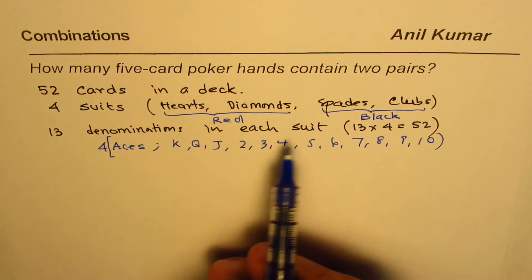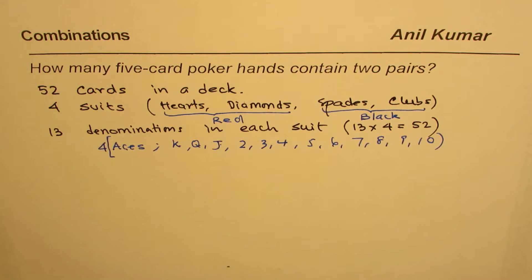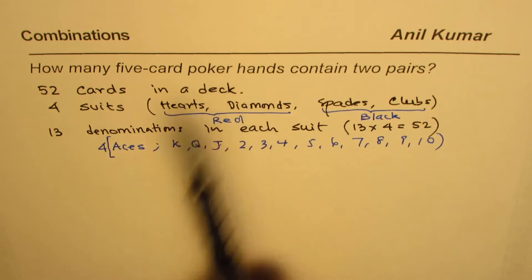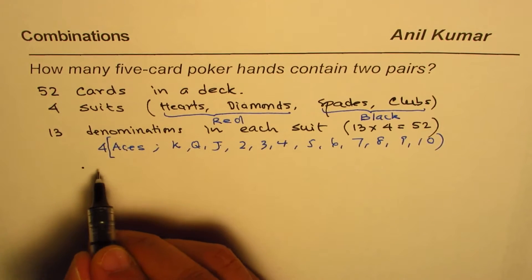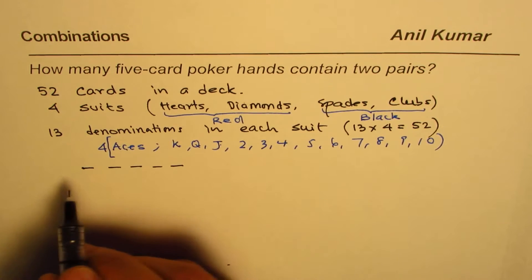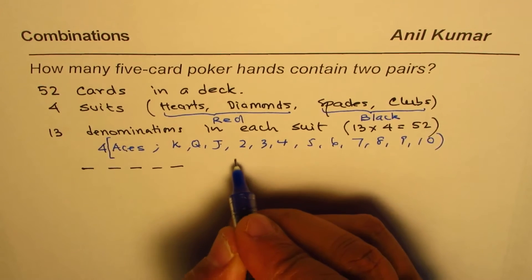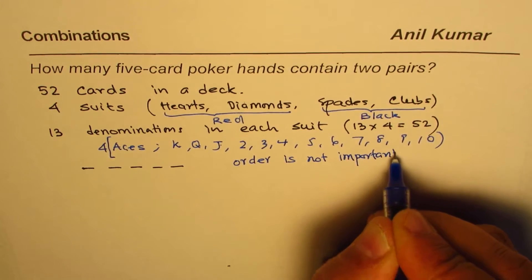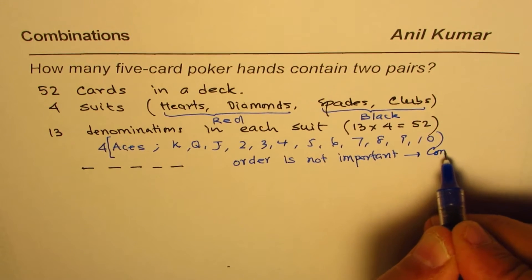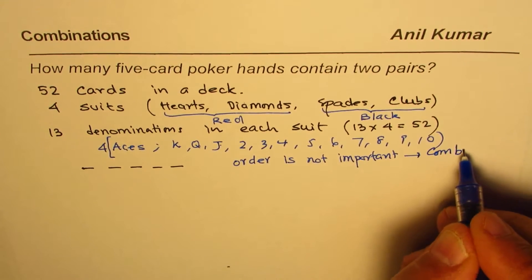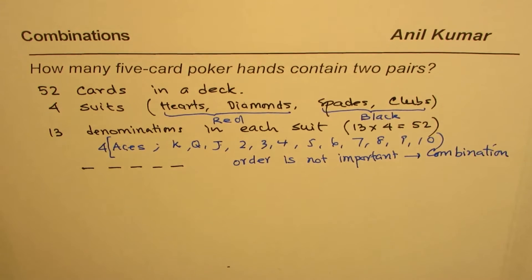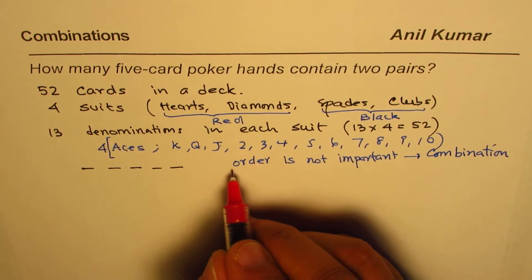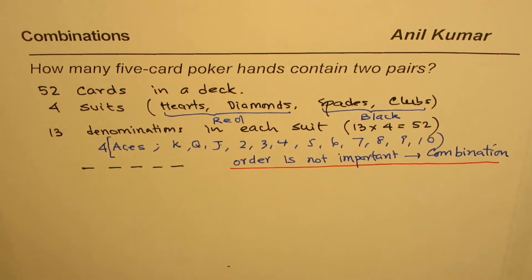So those are the thirteen cards. Now, when we say five card poker hands, if you have five cards, order is not important. Therefore it is a case of combination — not because of the heading, but because the order is not important. It's very important to understand when to use permutation and when to use combination.